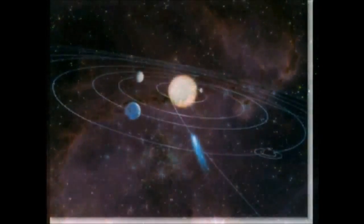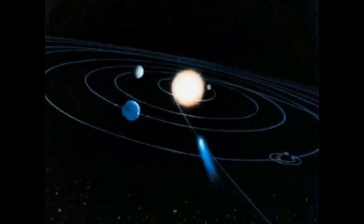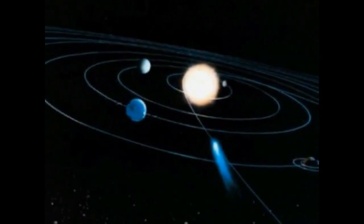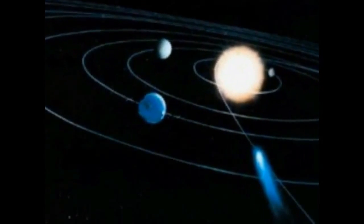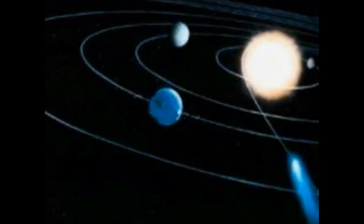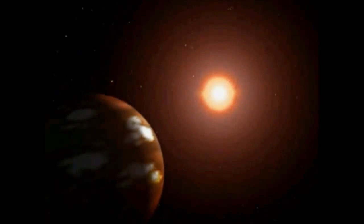Some would be too close to a star and water would boil away in the intense heat. Others would be too far and water would freeze. But for any planet in an orbit between those two extremes, water would be liquid, just like on Earth. Within a few hundred million years, accretion had created a huge ball of rock that would become our planet.